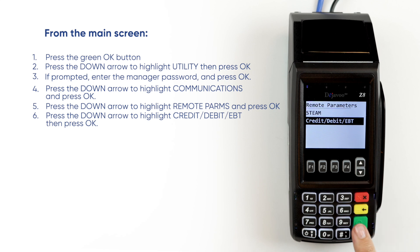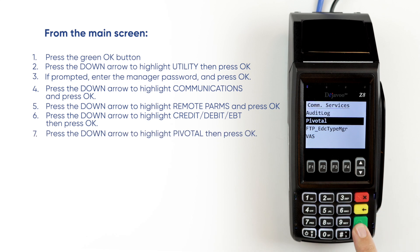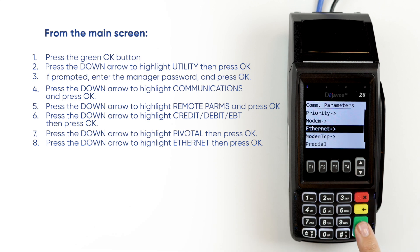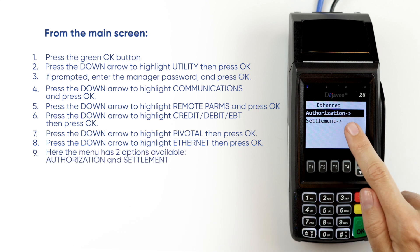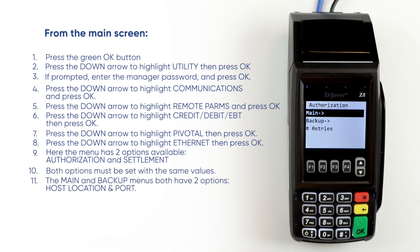Press the down arrow button to highlight Credit, Debit, EBT, then press OK. Press the down arrow button to highlight Pivotal, then press OK. Press the down arrow button to highlight Ethernet, then press OK. The menu has two options available: Authorization and Settlement. Both options must be set with the same values. The main and backup menus both have two options: Host Location and Port.